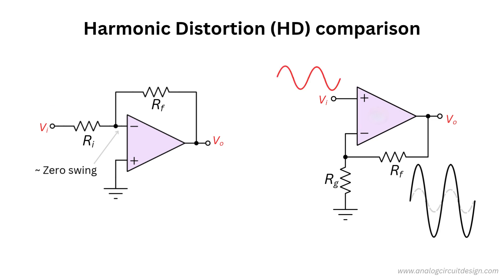But in the non-inverting amplifier, the input terminal moves with the signal due to a virtual short-to-the-input voltage. This will produce more distorted output. To conclude, inverting configuration has less distortion.